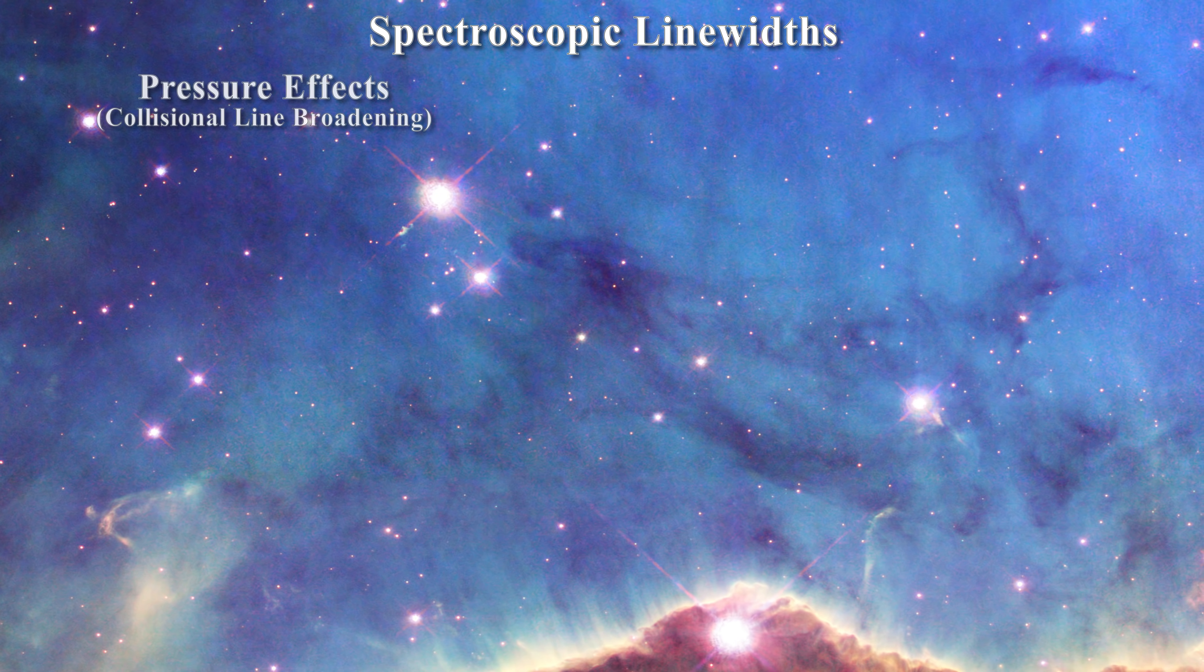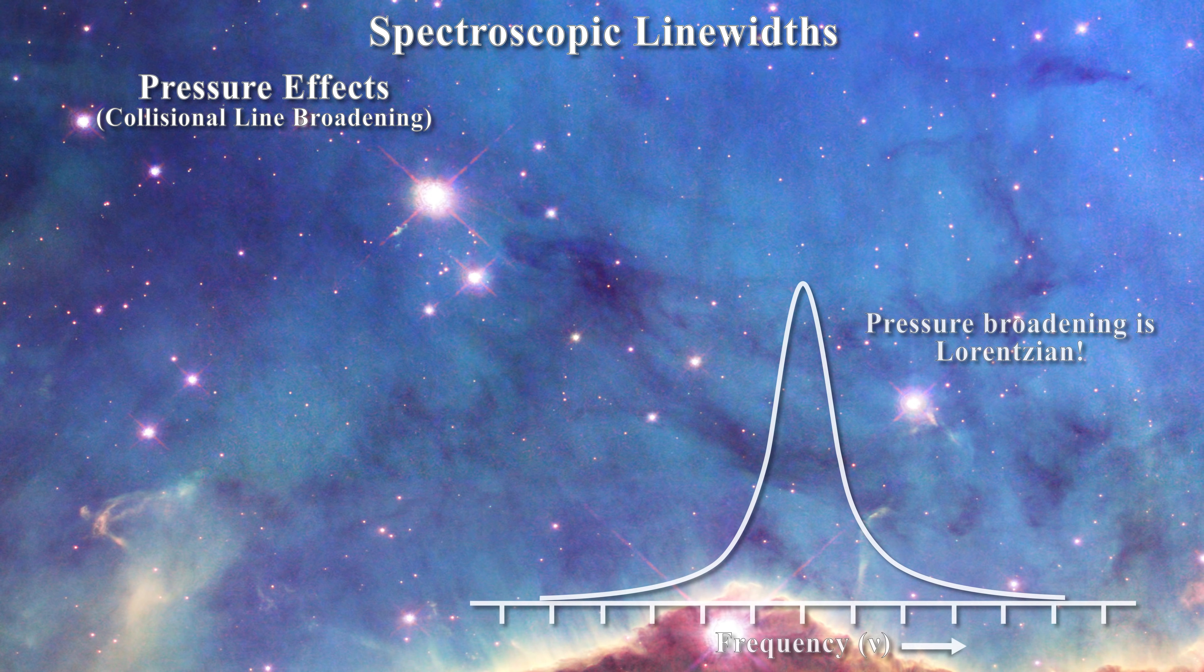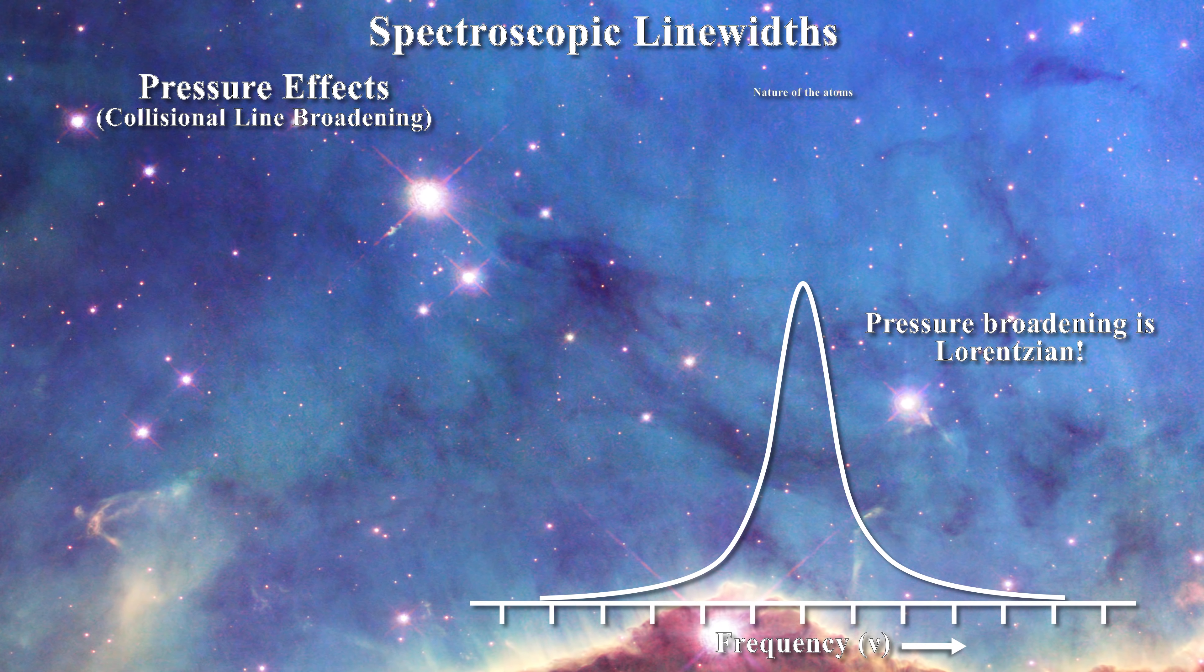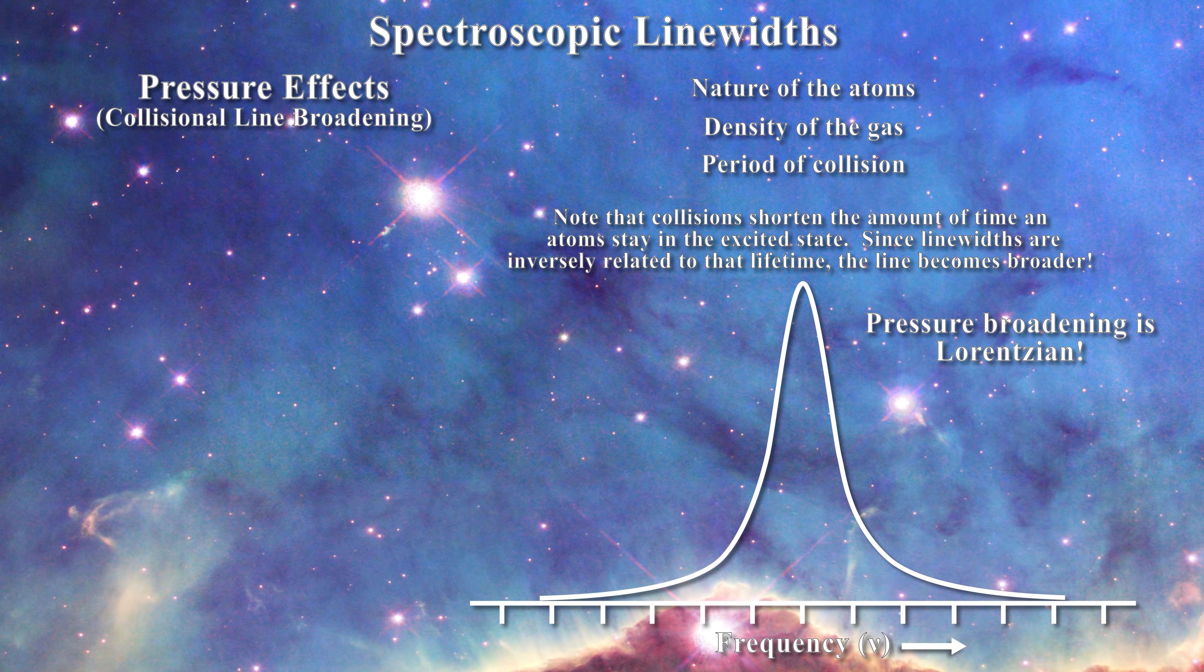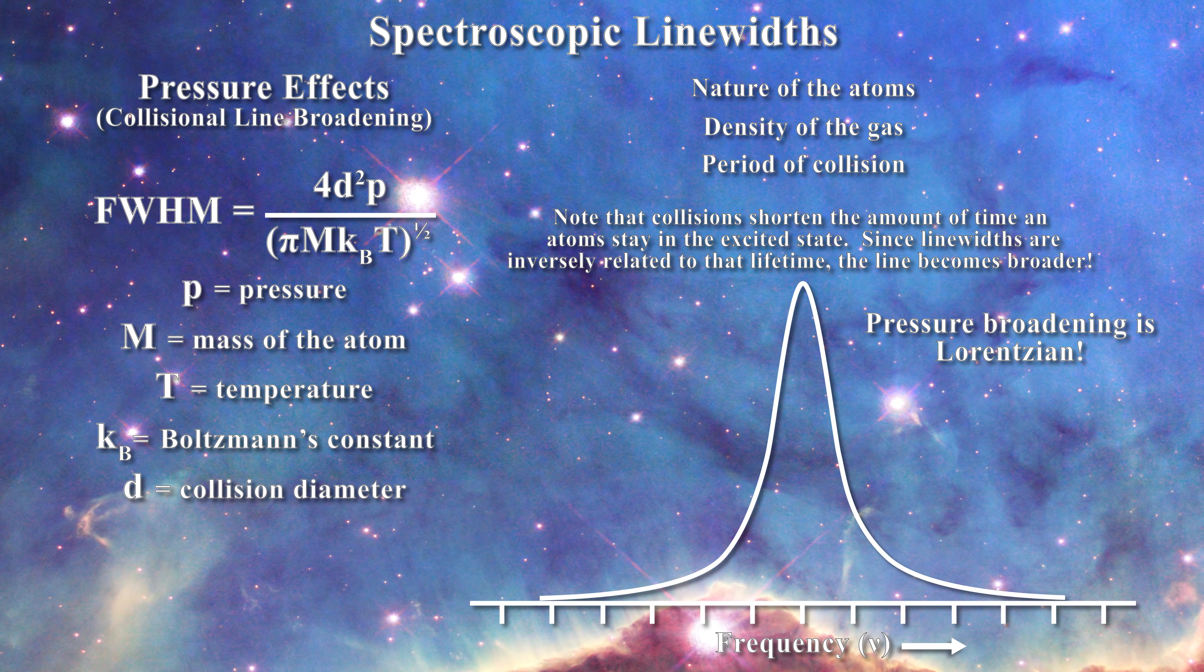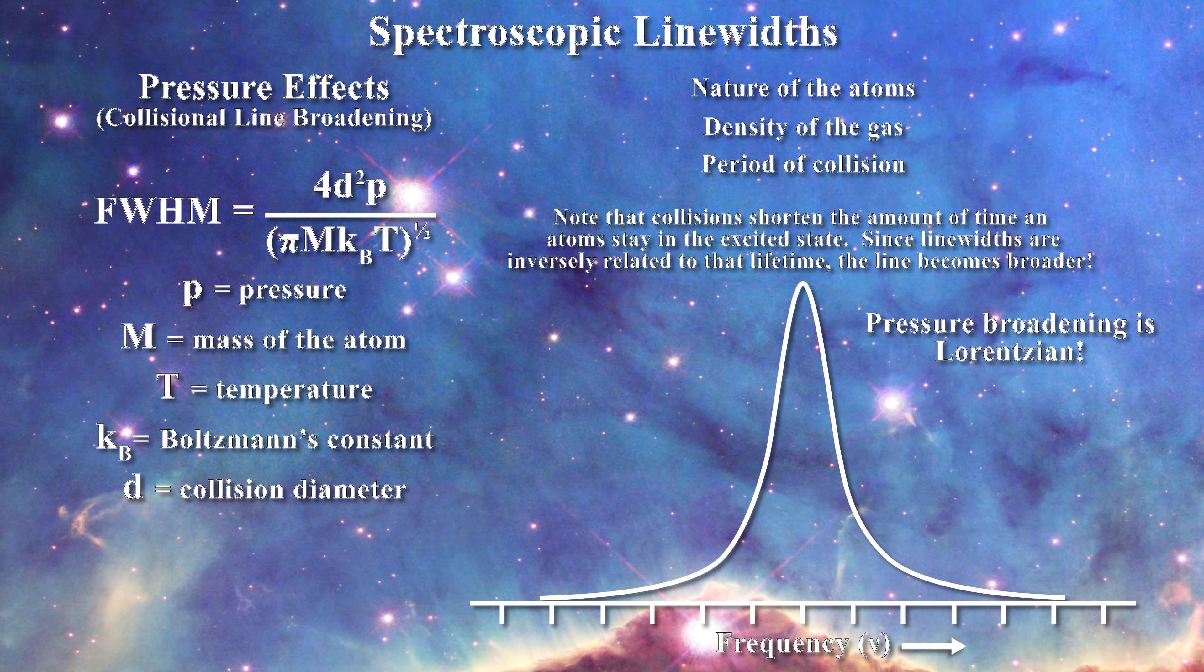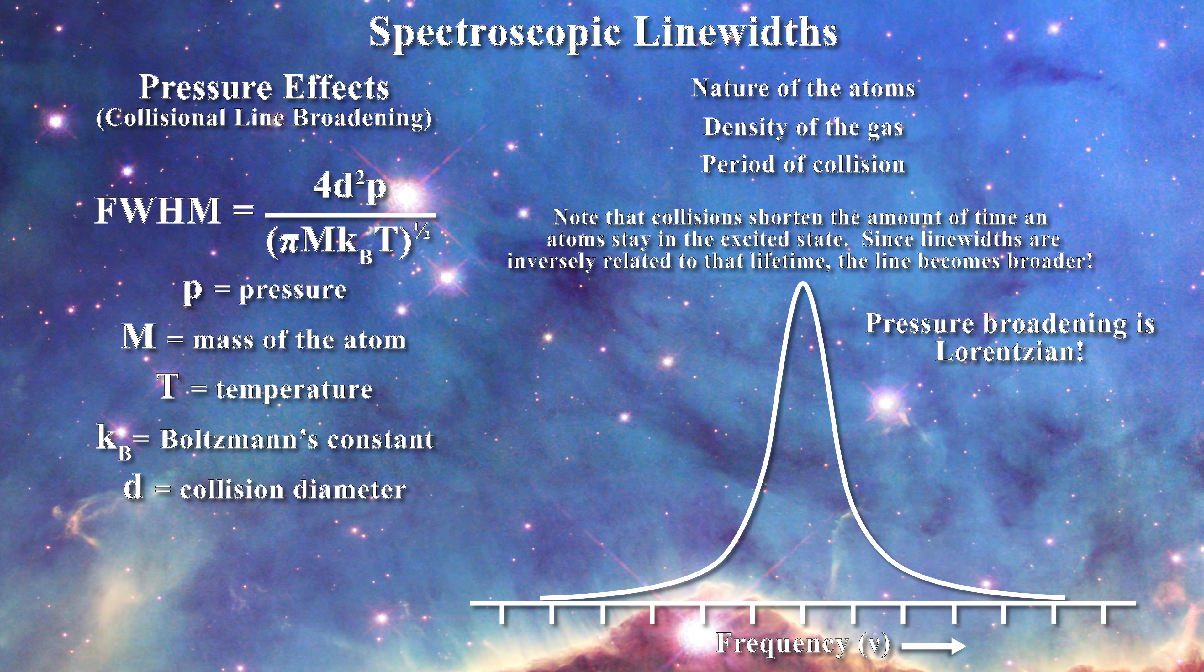Next, a line can also be broadened by pressure or collisional effects. This produces a Lorentzian line shape at least at lower pressures. Pressure effects depend on the nature of the atoms, the density of the gas and the period of collision. Here is the equation for pressure line broadening at relatively low densities when the time of interaction between the two atoms is so short that it could be neglected. The full width at half maximum is now governed by four parameters.